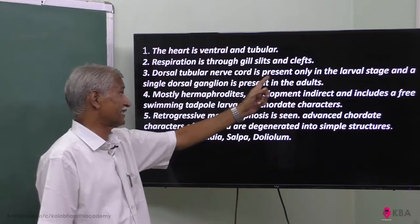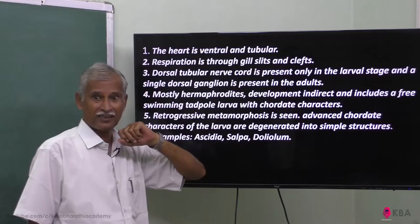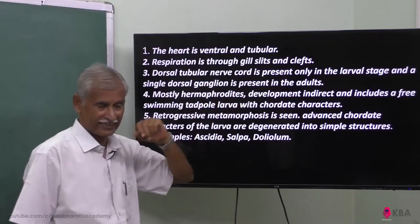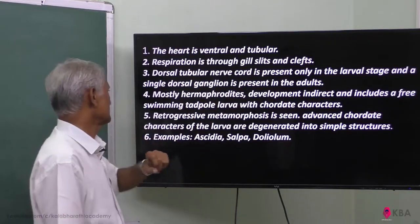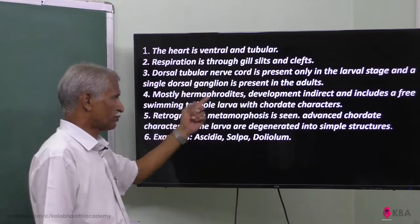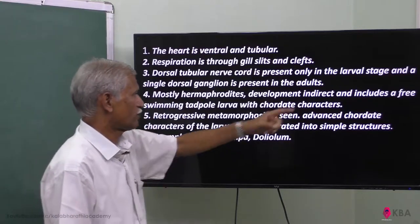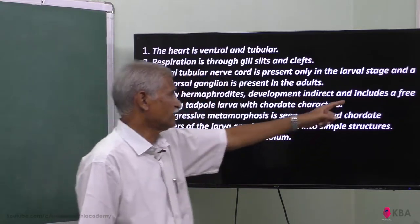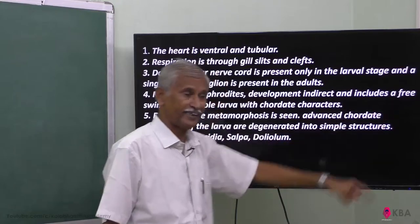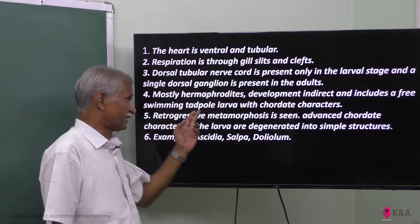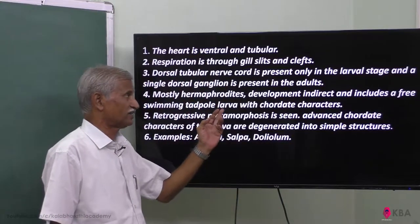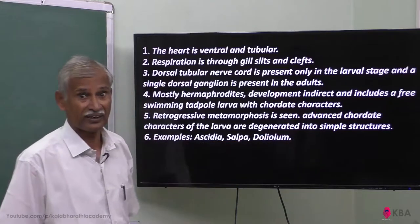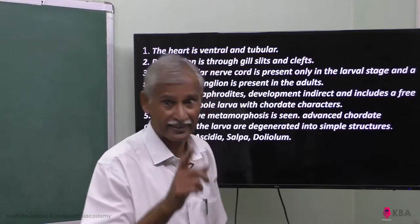Respiration is through gill slits. The dorsal tubular nerve cord is present only in the larval stage, and a single dorsal ganglion is present in the adult. Mostly hermaphrodites. Development is indirect, and includes a free-swimming tailed tadpole larva with all chordate characters.